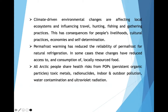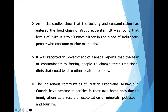Permafrost warming has reduced the reliability of permafrost for natural refrigeration. In some cases, these changes have reduced access to and consumption of locally resourced foods. An initial study showed that toxicity and contamination have entered the food chain of the Arctic ecosystem. It was found that levels of POPs are 3 to 10 times higher in the blood of indigenous people who consume marine mammals. Government of Canada documents reported that fear of contaminants is forcing people to change their traditional diet habits. Indigenous communities in Greenland and Nunavut in Canada have become minorities in their own homelands due to immigration resulting from exploitation of minerals, petroleum and tourism.